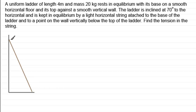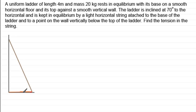The ladder rests on a smooth wall and smooth floor, so no friction is involved. Naturally this ladder would want to slide away, but it's kept in place by this string going from the base across to a point on the wall. It's horizontal, so it stops the ladder from sliding out, and there'll be a tension in that string pulling inwards. Let's mark that in red and call it T newtons.